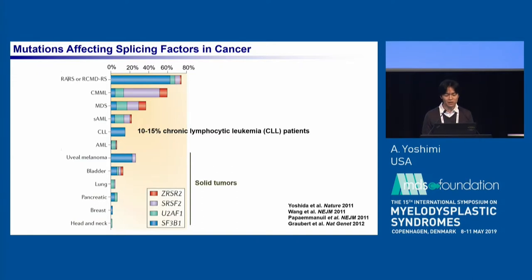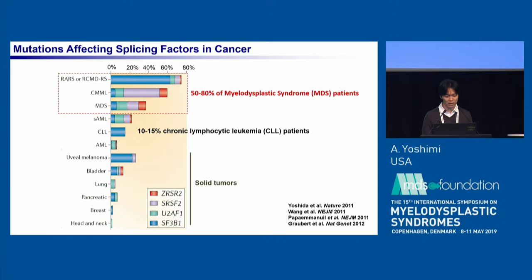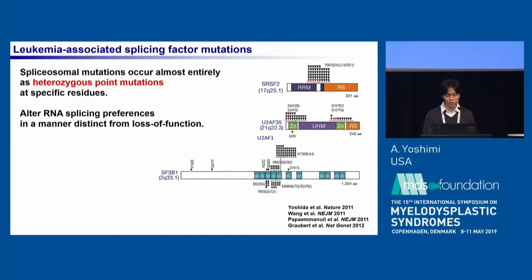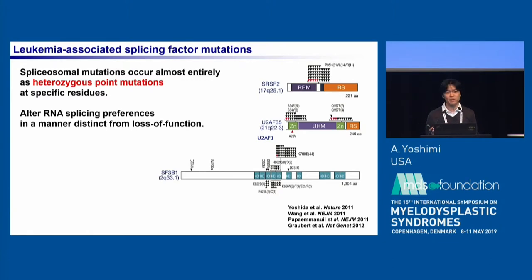Mutations affecting splicing factors are frequently found in a variety of myeloid leukemias, including MDS and AML. These leukemia-associated splicing factor mutations occur almost entirely as heterozygous point mutations at a specific residue. For example, SRSF2 has a hotspot at P95H.